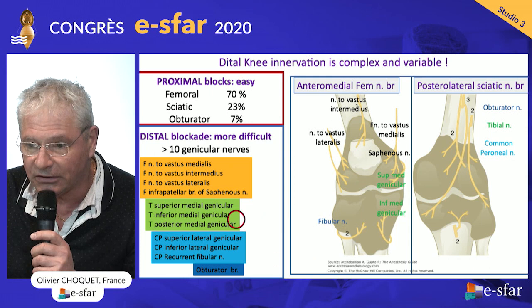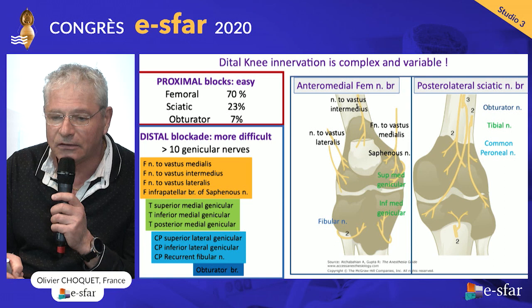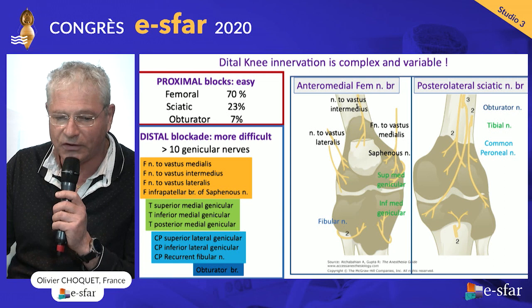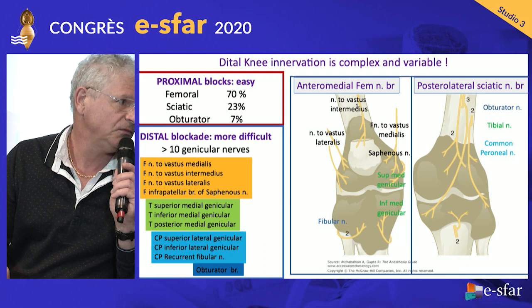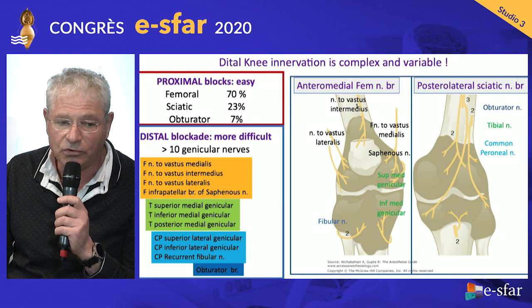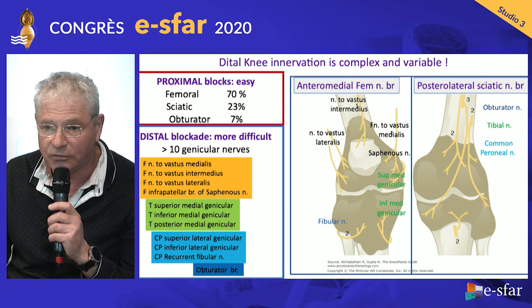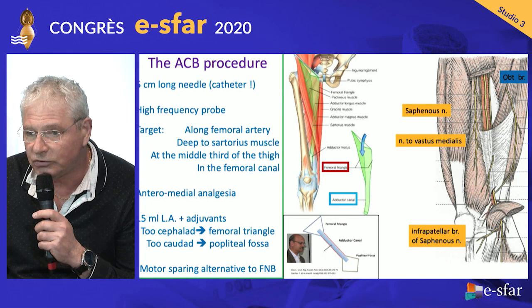These three main nerves give 10 branches to the knee, to the deep part of the knee, and there is a lot of variation. The femoral nerve provides innervation to the anteromedial part, and the sciatic nerve branches supply the posterolateral part. If you perform a distal block, you will target some of these nerves — which is why, with adductor canal block and IPAC (infiltration between the popliteal artery and the femoral shaft), it is not possible to achieve 100% analgesia after total knee replacement.